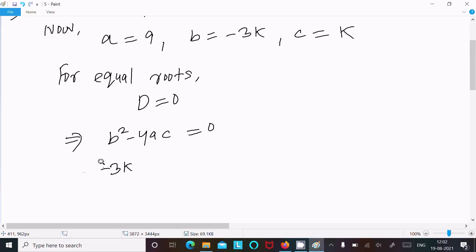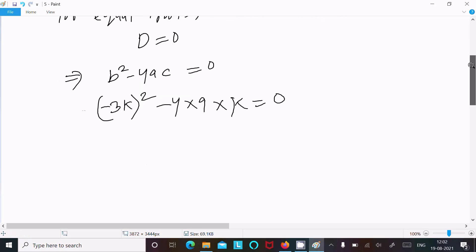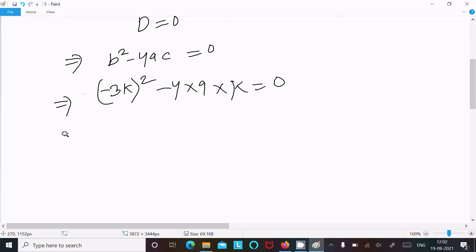(-3k)² - 4 × a value is 9 × c value is k = 0. After that, -3k squared is 9k² and this we can write as 36k = 0. The c value is k.